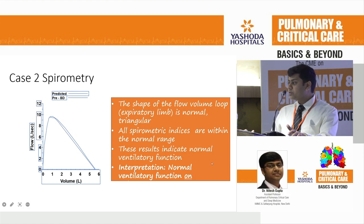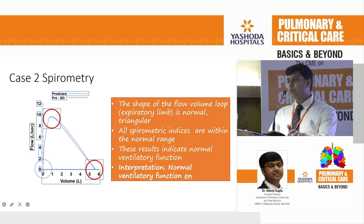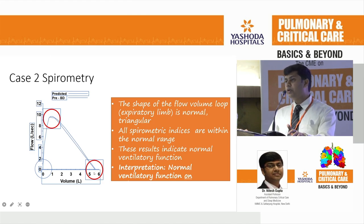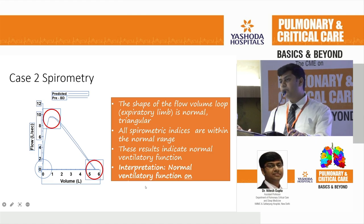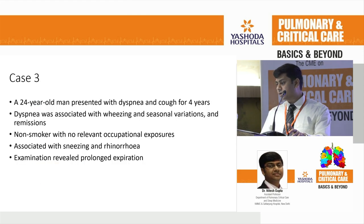Case 2 PFT: This is a normal spirometry. The graph starts from zero, has a good peak, and ends in a proper way without simply falling down. Interpretation: normal ventilatory function. This is how a normal spirometry loop should look.